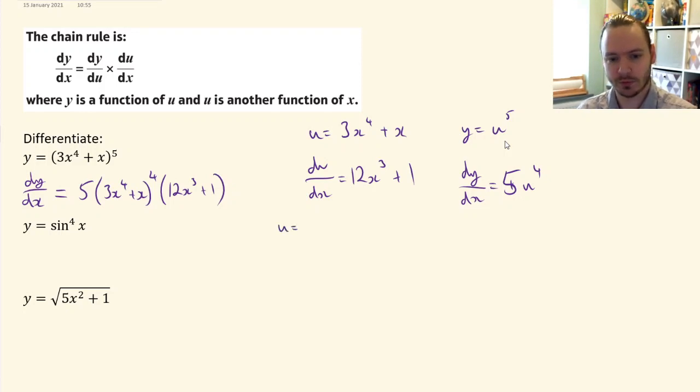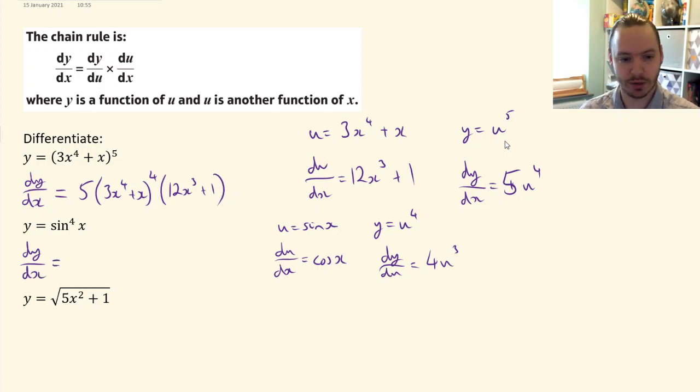For the second one, u is sin(x) and y is u^4 because it's sin^4(x). So du/dx is cos(x), and dy/du is 4u^3. Therefore dy/dx is 4sin^3(x) multiplied by cos(x).